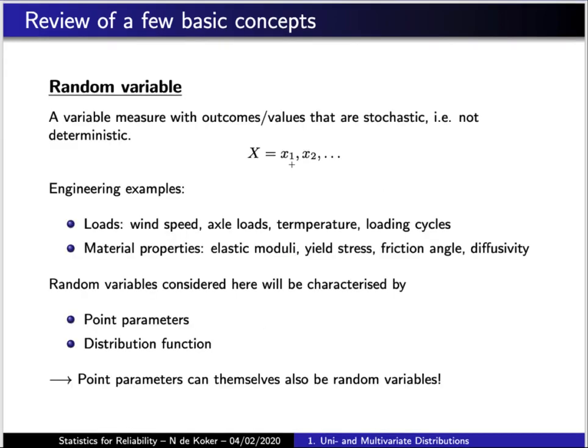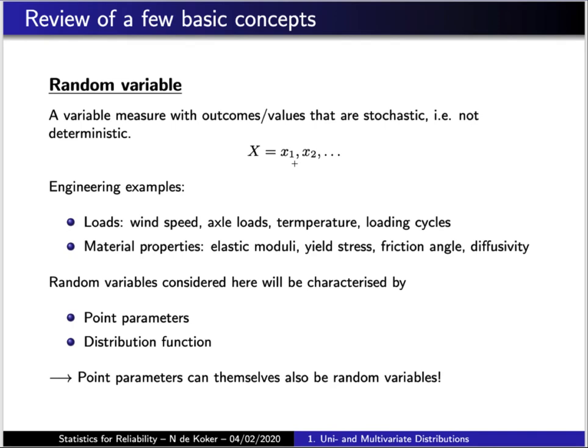For the purposes of this series of lectures, random variables will generally represent real numbers, and so will be able to take any real value or at least any positive real value. In the context of structural engineering, random processes or random variables that we are going to be interested in will include values that measure the magnitude of loads that a structure has been subjected to, or material properties like elastic moduli or yield stress.